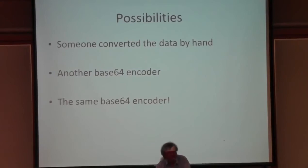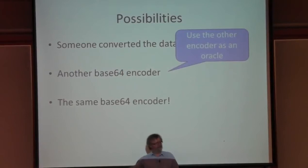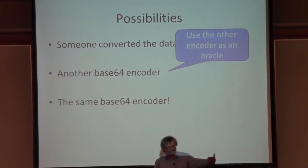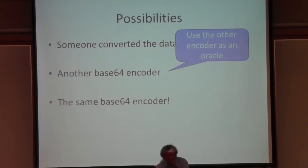When I ask industrial developers if they've done that - copied their own encoder's output into tests - usually every hand in the room goes up. Each of these possibilities can give us ideas for writing properties. If the developer has another base64 encoder, why not write a property that runs both encoders and compares the results? You might have one in Erlang and one in C, or one with a restrictive license. The reasons you can't use the other encoder in production don't apply to your tests, so you can make use of that idea.